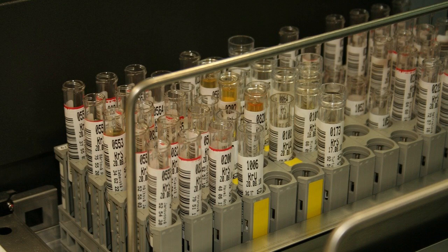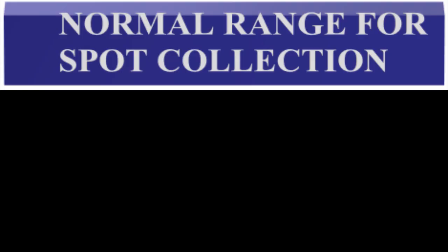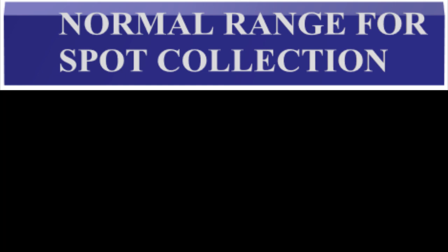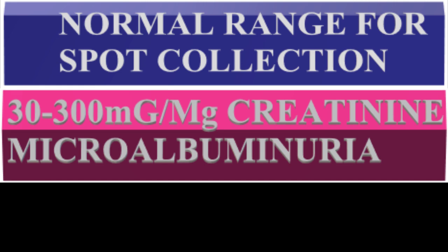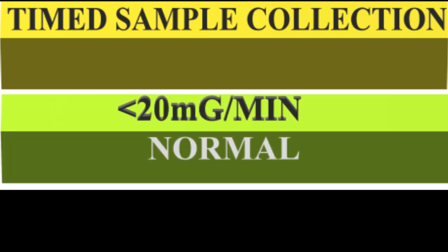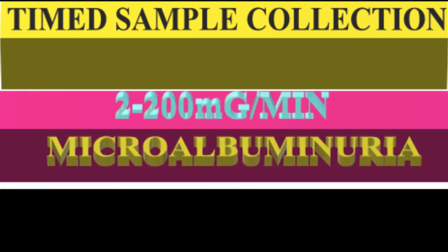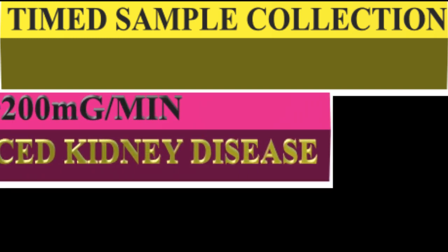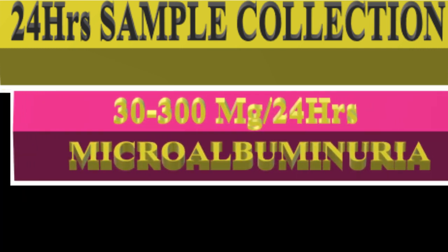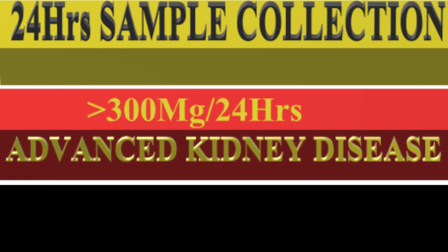Kits are available for automated analyzers. Normal ranges — Spot collection: less than 30 micrograms per milligram creatinine is normal; 30 to 300 micrograms per milligram creatinine indicates microalbuminuria; more than 300 micrograms per milligram creatinine indicates advanced kidney disease. Timed collection: less than 20 micrograms per minute is normal; 20 to 200 micrograms per minute is early kidney disease; more than 200 micrograms per minute is advanced kidney disease. 24-hour urine: less than 30 mg per 24 hours is normal; 30 to 300 mg per 24 hours detects early kidney disease; more than 300 mg per 24 hours indicates advanced kidney disease.